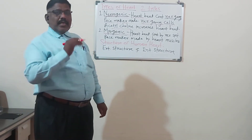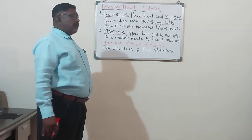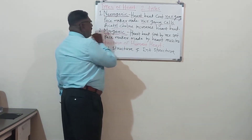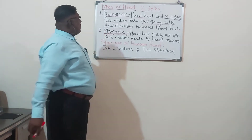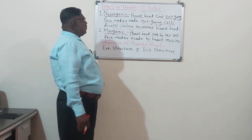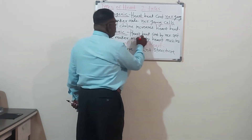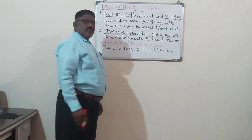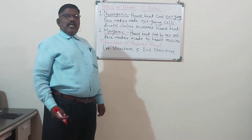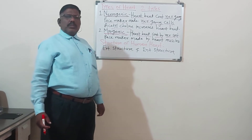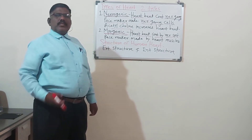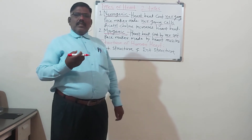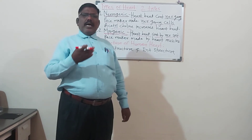The second type of heart given in your syllabus is the myogenic heart. In the myogenic heart, the heartbeat is controlled by the nervous system. The contraction and relaxation — which is called the heartbeat — the sound of which is lub-dub, lub-dub — is controlled by the nerve system.